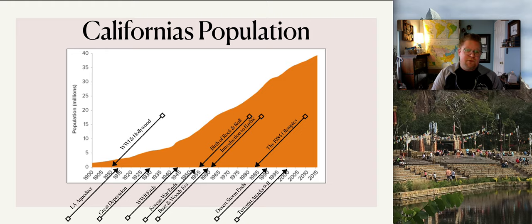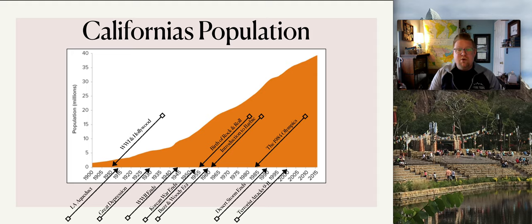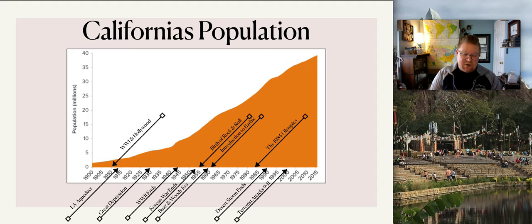Japanese Americans — most of them American citizens — moved into states that had never really seen anyone from Japan, other than on TV. Places like Michigan, Iowa, and states like that saw this influx of Japanese Americans dispersed across the country.